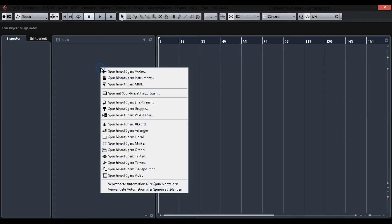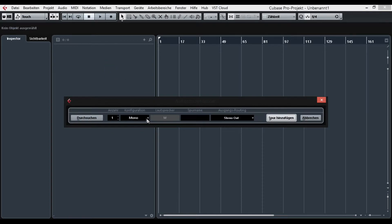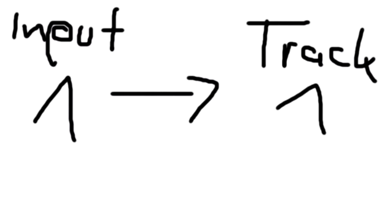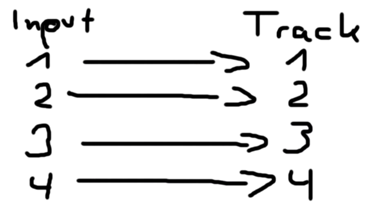Create a mono track and assign your main input channel to the track. If you feel ambitiously zealous and want to start out recording a full-on drum set, just create more tracks and assign each input to a different track.